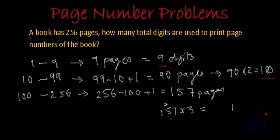Which is equal to 3 times 7 are 21, 2 carried forward, 3 times 5 are 15 plus 2 is 17, 1 carry forward, 3 times 1 are 3 plus 1 is 4.